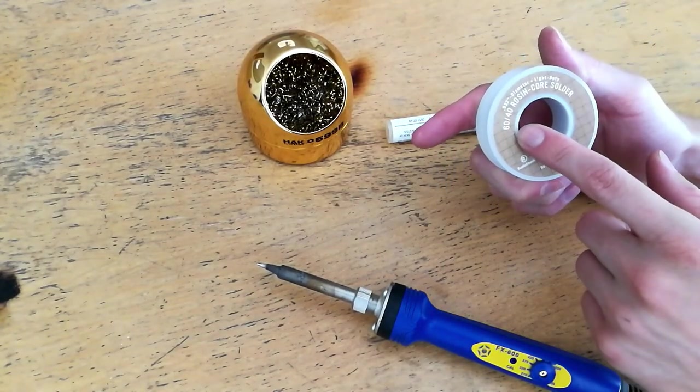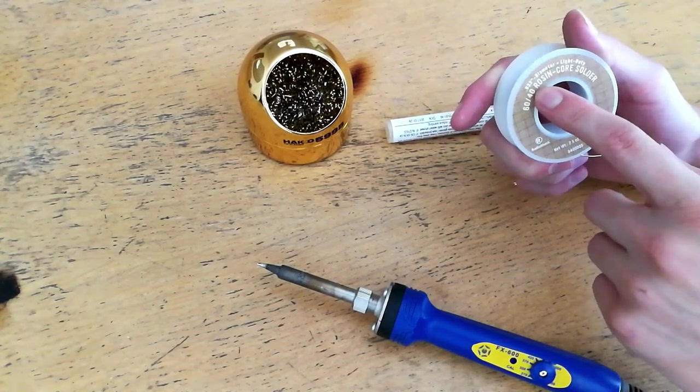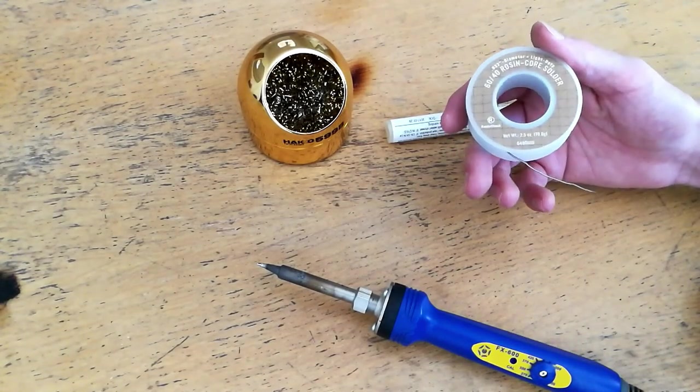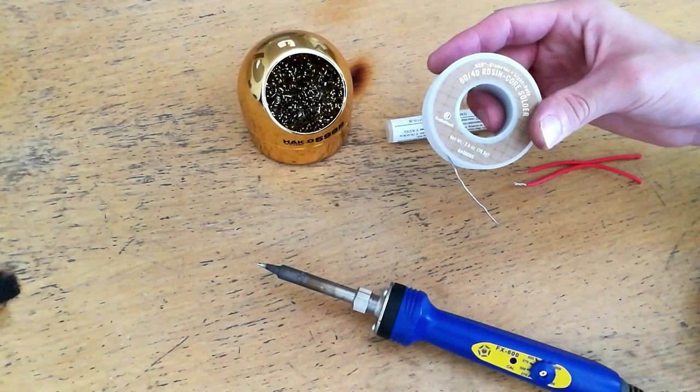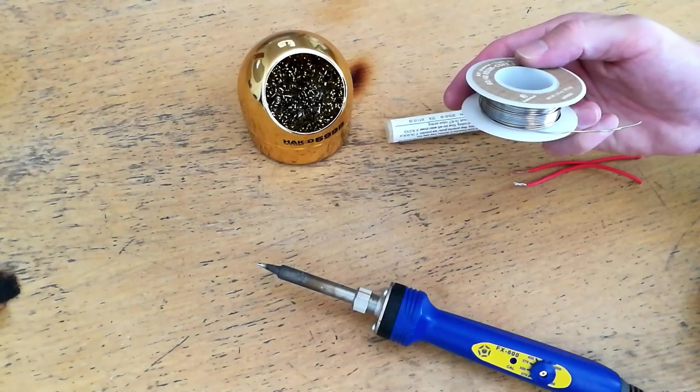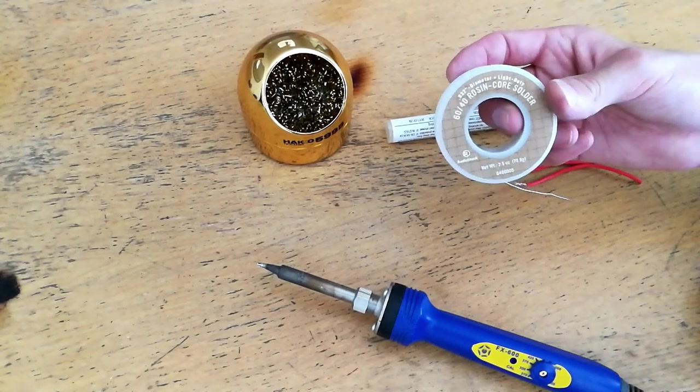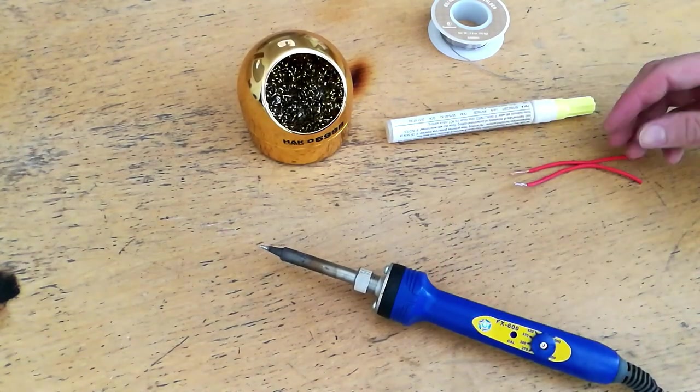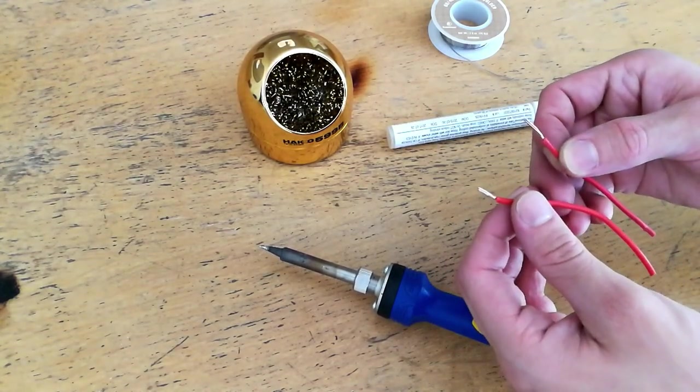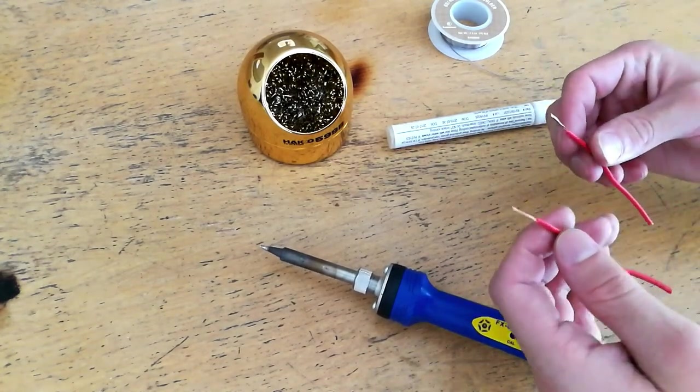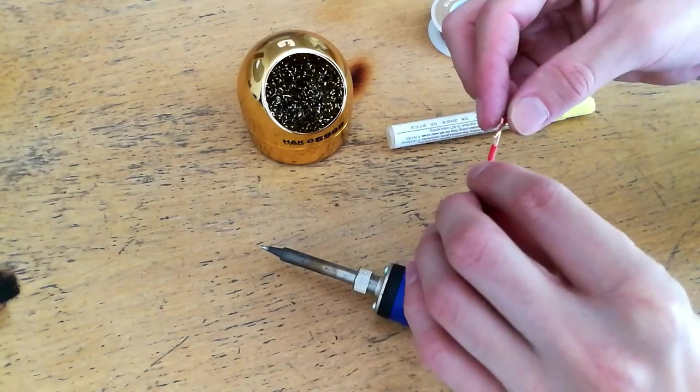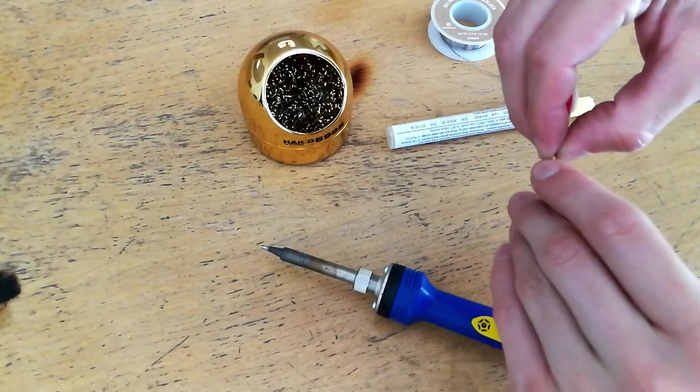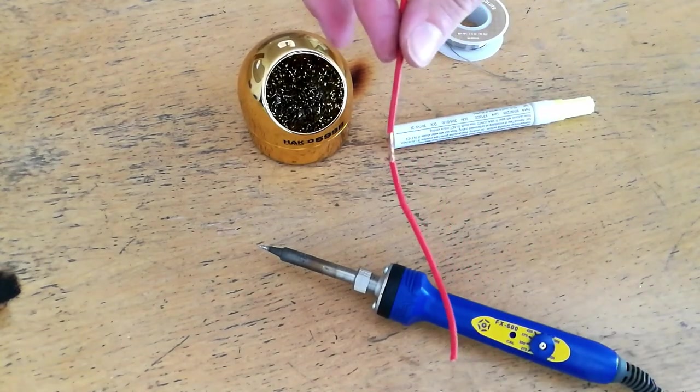And the last thing, of course, is the solder itself. This is 60-40 rosin core solder, meaning it's 60% tin and 40% lead. The solder in the classroom, I believe, is lead-free. So I believe it's a mixture of tin and a few other trace elements. But in either case, it's a good idea to be sure and wash your hands before eating or handling any food products after using any kind of solder, also because you don't know what kind of solder the previous user of the iron was using as well. So next I'm going to show you how to bond two wires together. There's lots of different things you can do with the soldering iron, but this is one of the most basic.